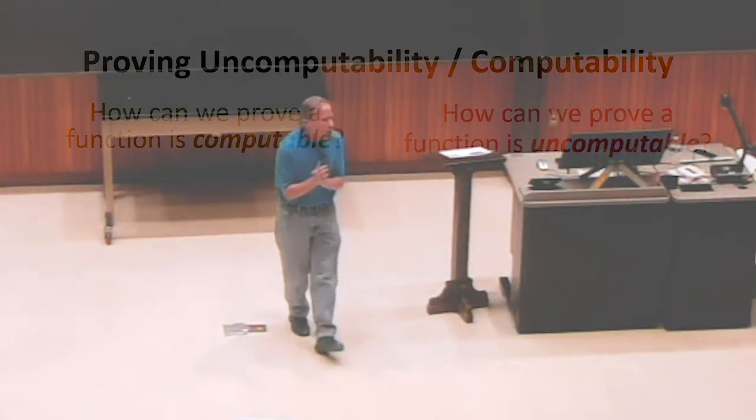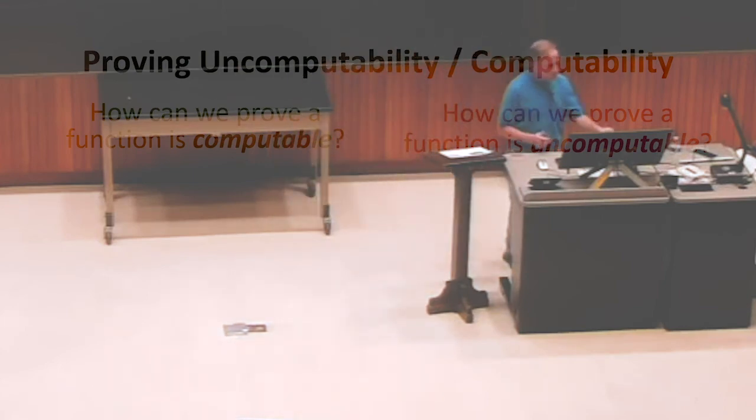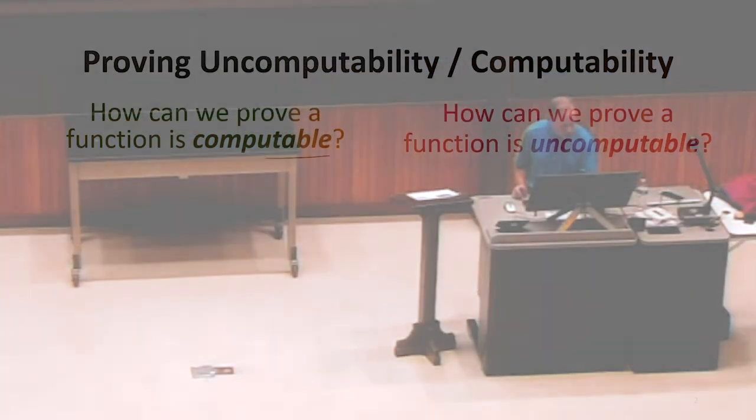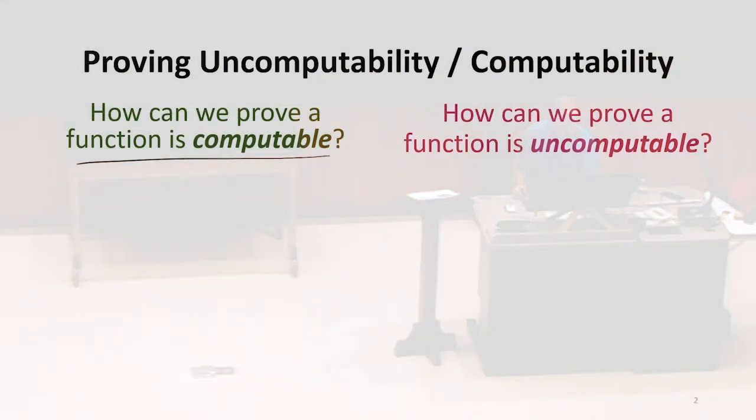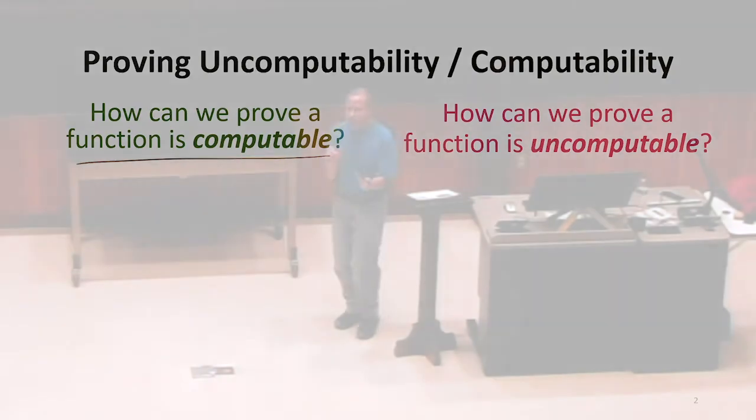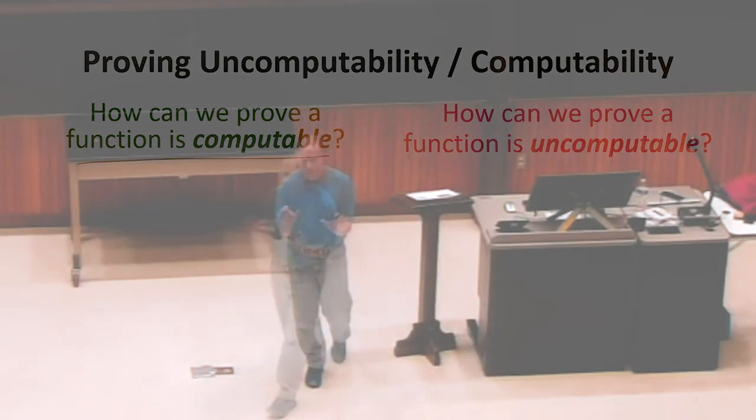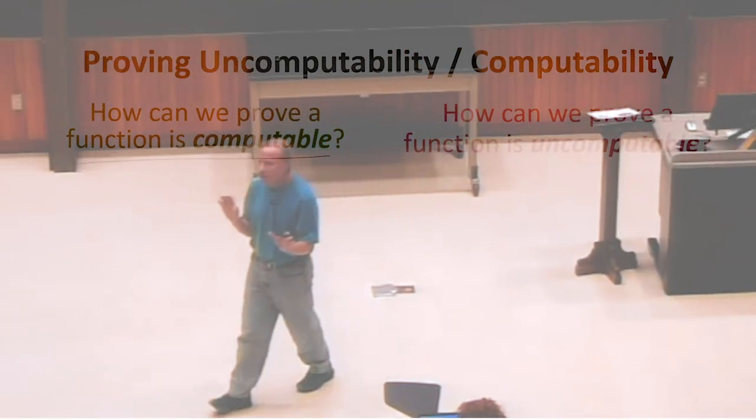So what are the strategies that you can use in general? If you want to prove something is computable, and that something could be a function, usually when we talk about languages, we use the decidable-undecidable terminology, but we're going to use those to mean basically the same thing.